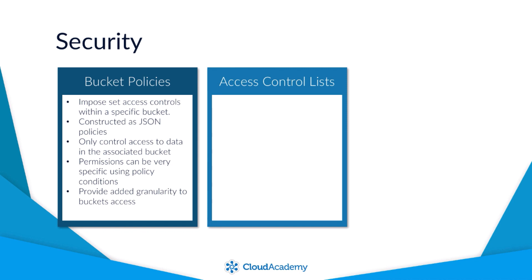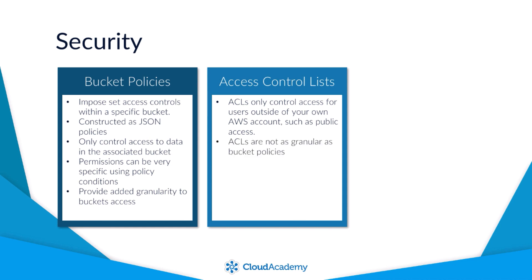Access Control Lists, or ACLs, are another method of controlling who has access to your bucket. However, they only control access for users outside of your own AWS account, such as access from other AWS accounts or public access. ACLs are not as granular as bucket policies and so the permissions are broad in access — for example, list objects and write objects.